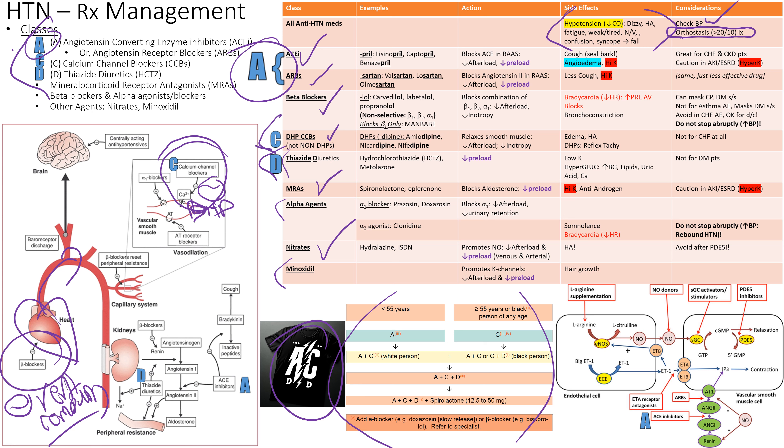Hypertension puts more stress on the heart, and the SNS kicks in saying 'get bigger, get stronger' — like adding bigger rims and a spoiler — but that's not going to have good outcomes. ACE inhibitors and ARBs stop angiotensin 2 from doing its thing — either by stopping production of angiotensin 2 or by blocking the receptors from accepting it, because angiotensin 2 binding to those receptors causes vasoconstriction.